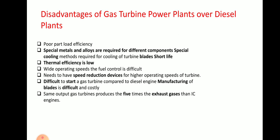There are certain disadvantages also. First, poor part load efficiency. Second, special metals and alloys are required for different components. Special cooling methods are required for cooling of turbine blades. Short life. Thermal efficiency is low. Wide operating speed — the fuel control is difficult and needs speed reduction devices for the higher operating speed of the turbine.